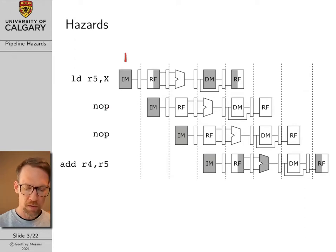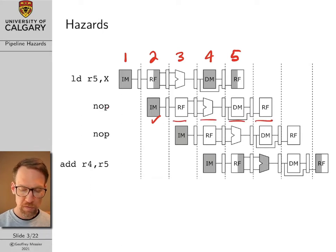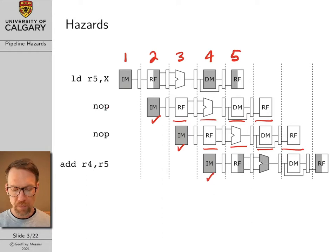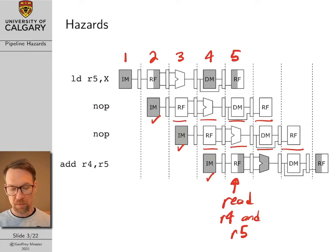In clock cycle 1 we fetch the load command from instruction memory. In clock cycle 2 we read from the register. Clock cycle 3 we do nothing. Clock cycle 4 we read the memory. And in clock cycle 5 we update register 5. A no-op command will be fetched from instruction memory, but after that nothing happens in any of the following stages. It basically just fills the pipeline with nothing. It's not until clock cycle 4 that we fetch the machine language instruction for add, and then we read R4 and R5 in clock cycle 5, so we've delayed when add accesses register 5 and bought time for register 5 to be updated. This fixes the problem.